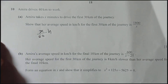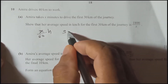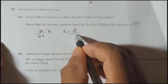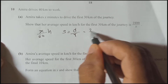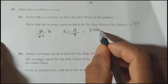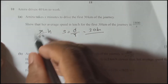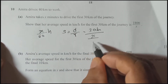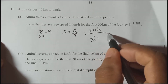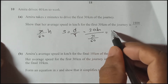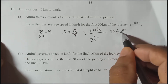She takes X/60 hours to cover 30 km. So let's rewrite: speed equals distance over time. Distance is 30 km, and time is X divided by 60. That's the idea.